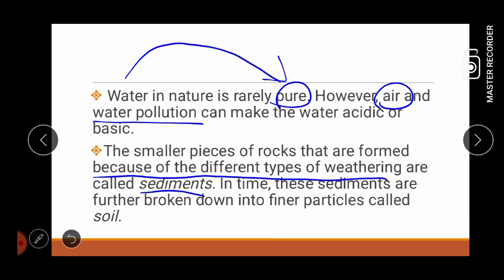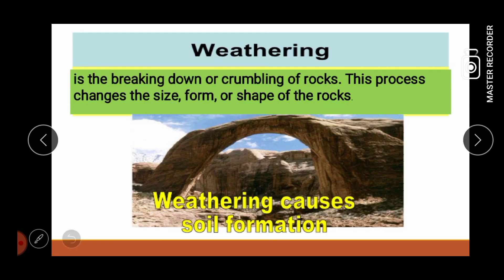Ngayon, these sediments are further broken down into finer particles. Yung sediments na durog pa siya ng nadurog into finer particles, at yung finer particles na po natin ay tinatawag na po nating soil. So, kapag tinanong saan galing si soil, ang sagot po natin ay sa rocks. Sa paanong paraan? Because of weathering, yung mga rocks will break down into smaller pieces — ang tawag po doon sediments. Itong sediments magbe-breakdown ulit siya into finer particles at ang tawag na po datin doon ay soil. Thank you pupils for listening and I hope that you already know what is weathering and you can easily differentiate mechanical weathering from chemical weathering.